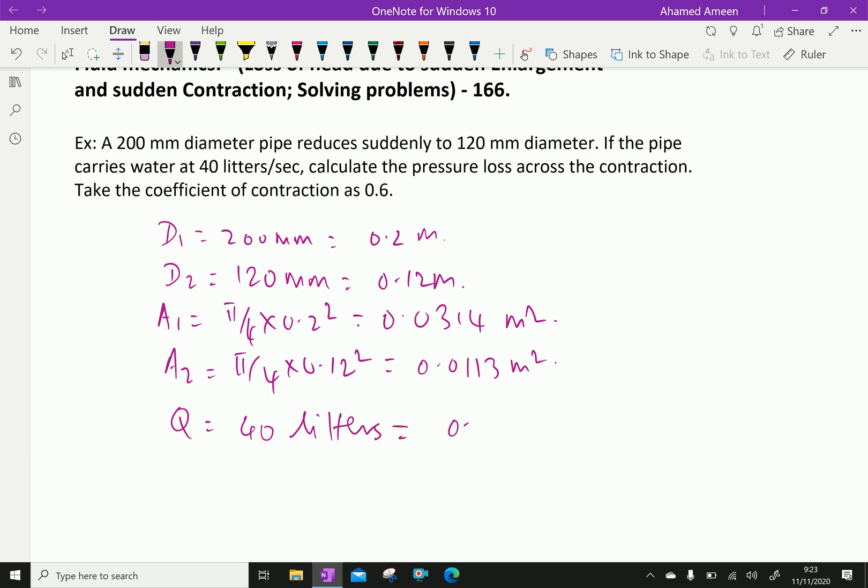Discharge through the pipe equals 40 liters, which is equal to 0.04 meter cube per second.